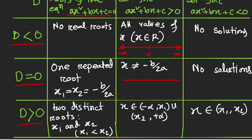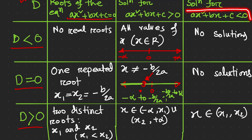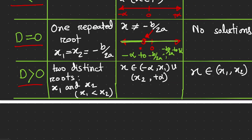Let me draw this on a one-dimensional coordinate system. The point −b / 2a is marked here. Excluding this point, all other numbers belong to the solution: from negative infinity to −b/2a, and from −b/2a to positive infinity. If the inequality is the quadratic expression less than zero, then for this particular case there are no solutions.